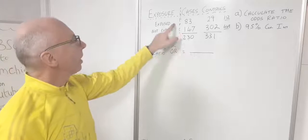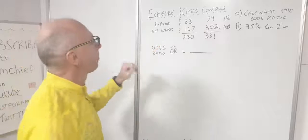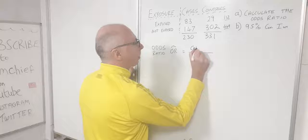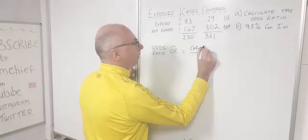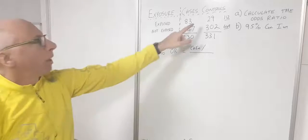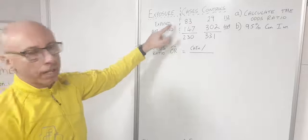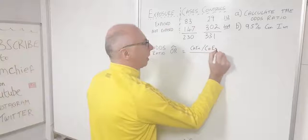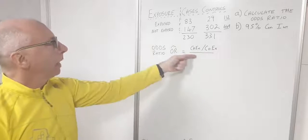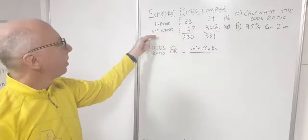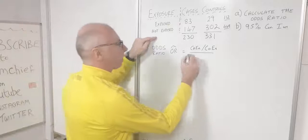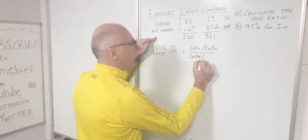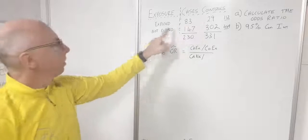Our numerator will be cases exposed divided by controls exposed, and our denominator is the opposite — cases not exposed divided by controls not exposed.